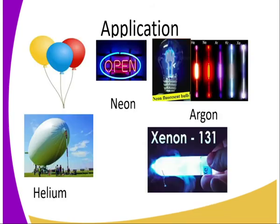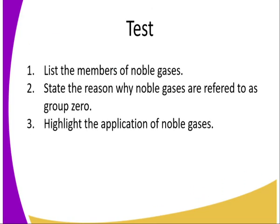Neon is used in tubes because it gives different colors. These tubes have been used for display purposes. Neon and argon are also used in bulbs because of their inert nature — they prevent the oxidation of the filament in the tube or bulb.